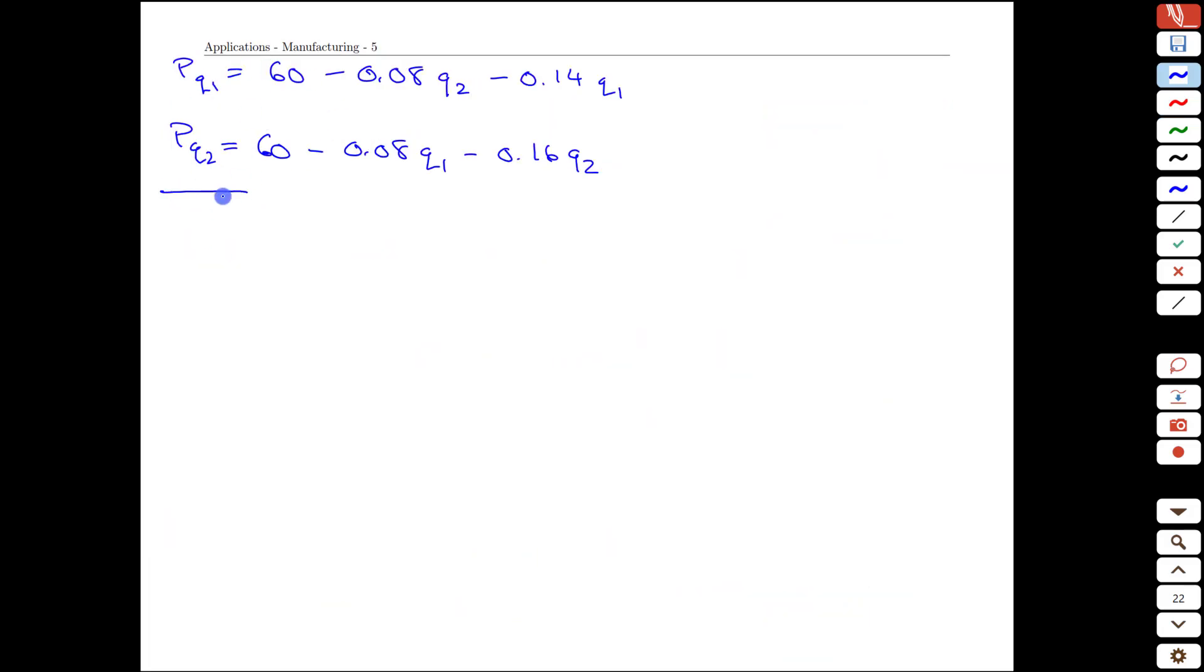With our first derivatives here, we can then find the second derivatives. And again, it's a bit of subscript extravaganza here. But we take the q1 derivative of this. There's actually only one term with q1 in it. And this derivative would just be the coefficient. We repeat that for q2. And we end up with negative 0.16. And then we do the mixed partial derivative. Pick either one of these. We'll start with the q1 derivative. And then take the derivative with respect to q2. We get a constant negative 0.08.